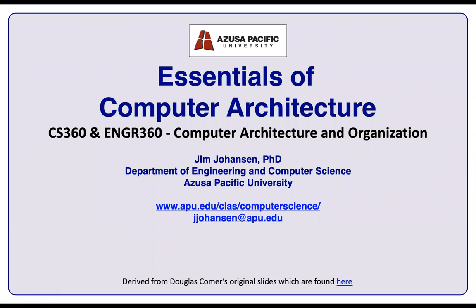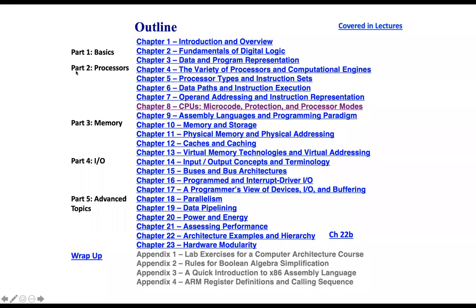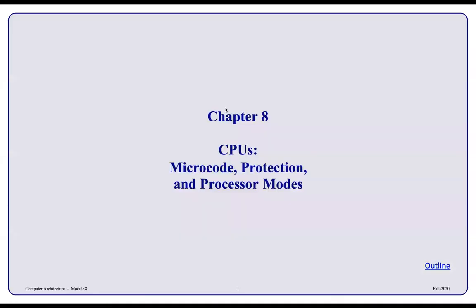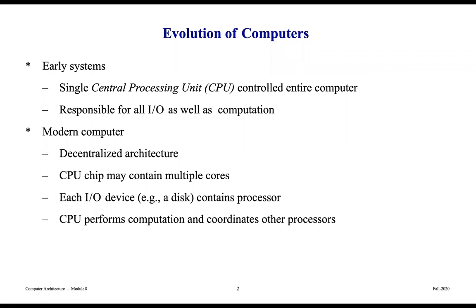Hello and welcome back to the Essentials of Computer Architecture and Organization. We're going to continue working through part two, and what we're going to focus on is getting more in-depth into what takes place in CPUs — that's chapter 8. We will be talking about microcode, protection, and the distinctions of how you would allow function in an operating system versus in an application, and what processor modes can take place.